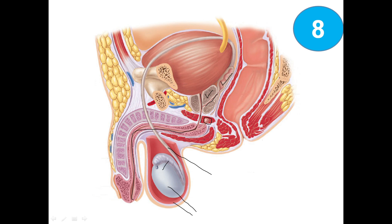Here we can see the penis, with the corpora cavernosa as the upper two structures and the corpus spongiosum as the lower one. This is the glans of the penis and the skin around it is the prepuce. We also have the urinary bladder, ureter, and the rectum and anus.